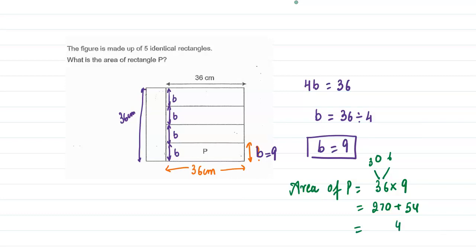Now quickly add this: 0 plus 4 is 4, 5 and 7 is 12, so 324 centimeter square is the area of rectangle P. I hope it is clear, thanks for watching.